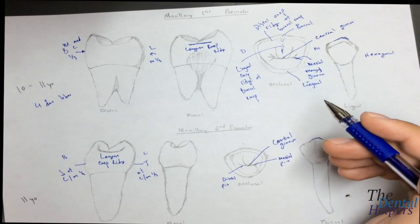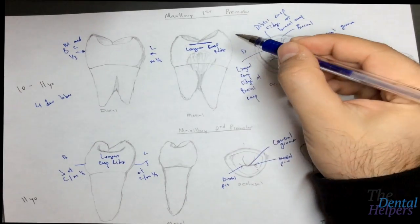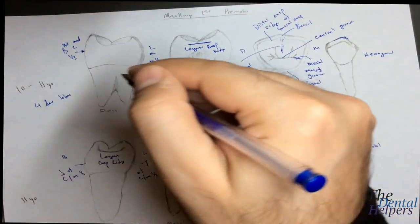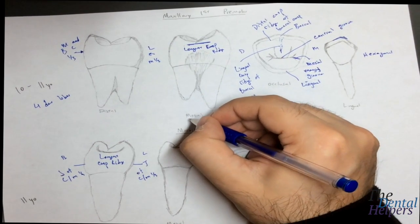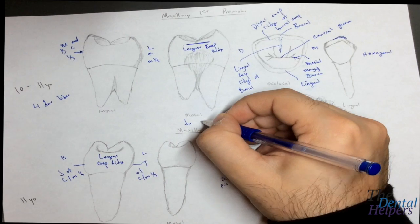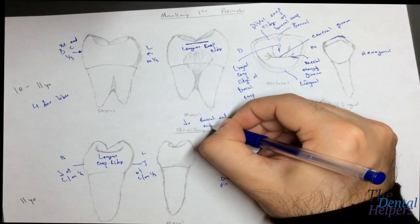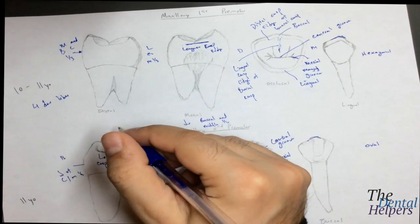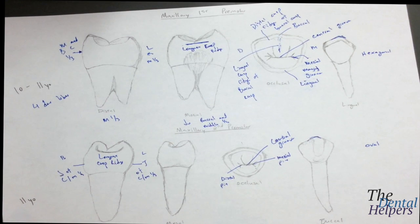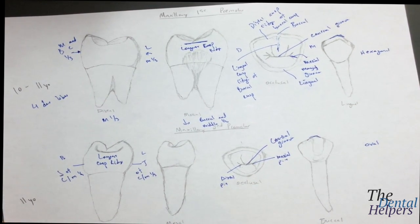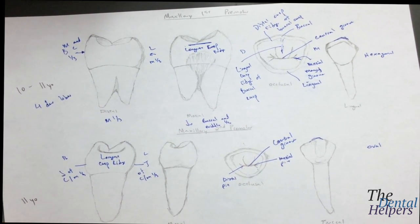Regarding contacts: the mesial contact on the maxillary first is going to be near the junction of the buccal and middle third, while on the distal it's in the middle third. The maxillary second is easier — both contacts are on the middle third, so there's less to memorize.